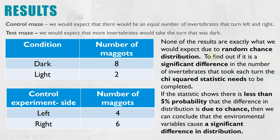The chi-squared statistic will be part of your analysis — I'll link the video at the top. Once you've calculated your chi-squared statistic, you can use that to come to a conclusion. If your statistic shows there is less than 5% probability that the difference in the number of maggots going to the dark side compared to the light is due to chance, then we can conclude that light did cause a significant difference in distribution. I'll also link my maths skills playlist at the end of this video.